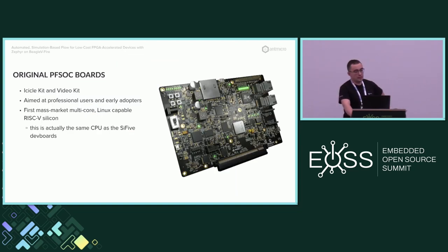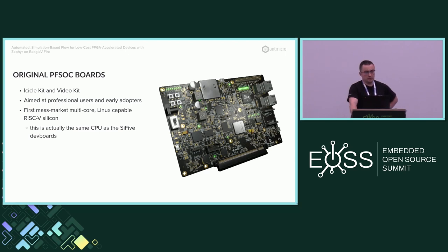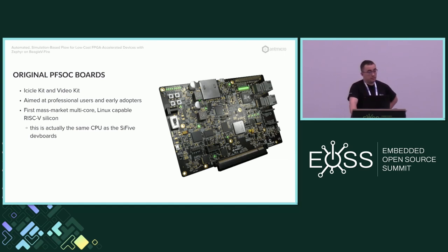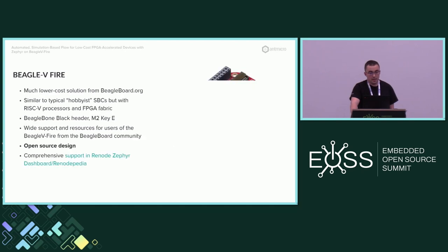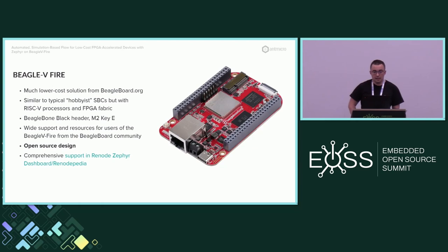Originally when Microchip released PolarFire SoC to the public, the original kit was called the Icicle Kit, and later they released the Video Kit. Both of them are a bit on the expensive side — the Icicle Kit is about $600, the Video Kit is $2,000. So if you're just an amateur or want to try it out, they're probably not the easiest pieces of hardware to obtain. They were produced for mass market, and while there were boards from SiFive like HiFive Unleashed — and the PolarFire SoC actually has the same CPU — the cost part is definitely a big issue.